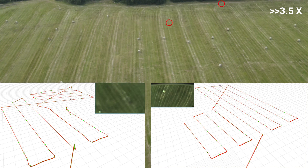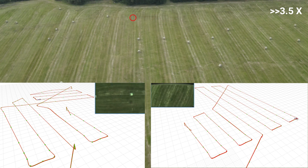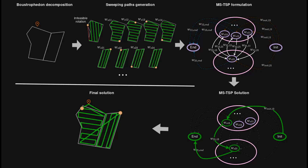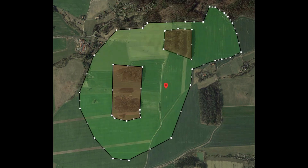The presented method uses a boustrophedon-based cellular decomposition and reduces the coverage problem to an instance of a multiple set traveling salesman problem, which is then solved by a heuristic algorithm. We show our coverage path planning algorithm steps on an example: the task is to cover the green area with two UAVs starting at the same position marked with the red marker. The first step is area decomposition into non-overlapping cells using boustrophedon decomposition.